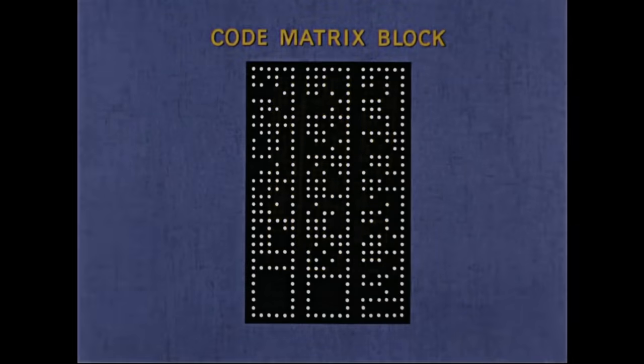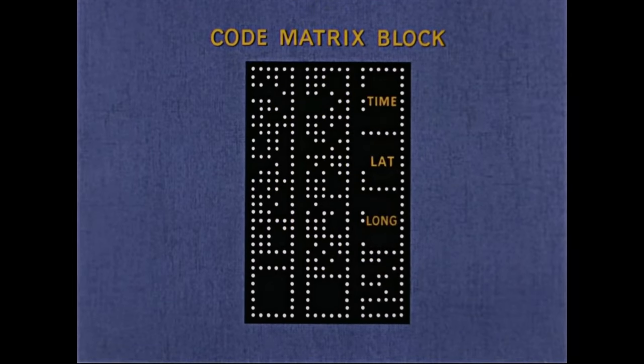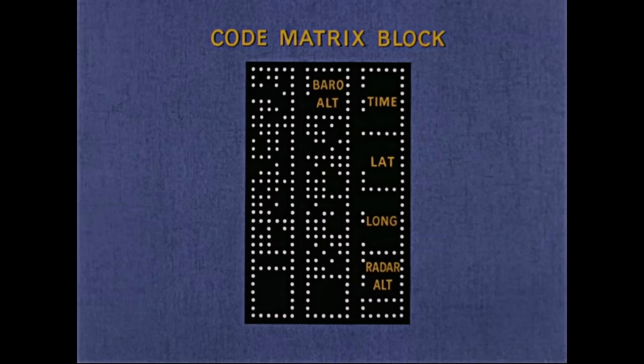The photography employed in this system is unique in that each frame is imprinted with a code matrix block that is read by the SCV and the information passed into the computer. The block contains navigational data: time, latitude and longitude, radar altitude, and barometric altitude.